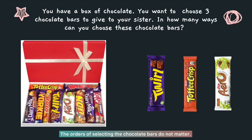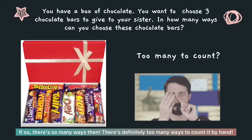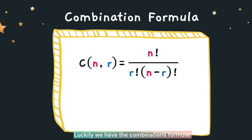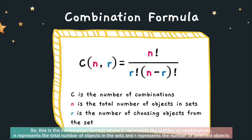The order of selecting the chocolate bars does not matter. There are too many ways to count by hand, so how can we calculate all these possible combinations? Luckily, we have the combinations formula, where C represents the number of combinations, N represents the total number of objects in the set, and R represents the number of selected objects.